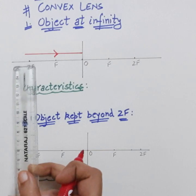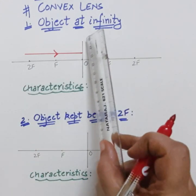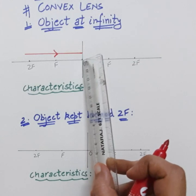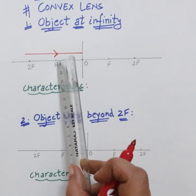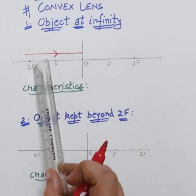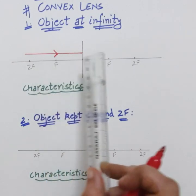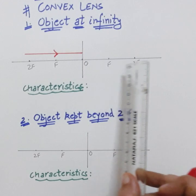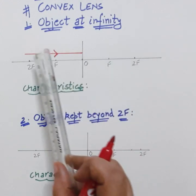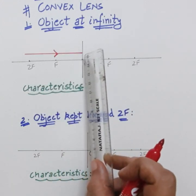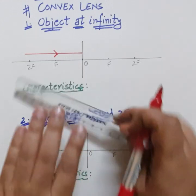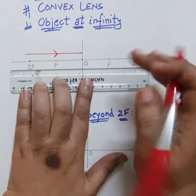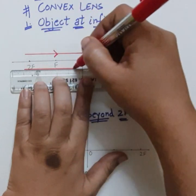Before starting the ray diagram, we draw the principal axis — the central line of the lens. This point is called the optical center. Three centimeters on each side we mark f, and three centimeters further we mark 2f. Now we will take two parallel rays coming from infinity, because we need at least two rays to draw the image.